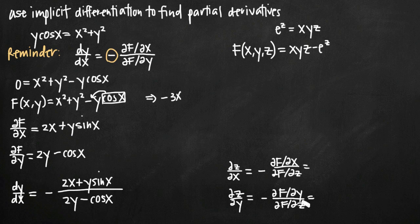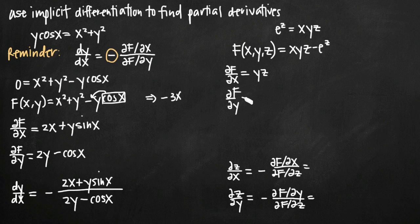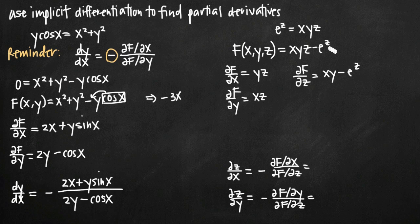We need to find three partial derivatives. Treating x as the variable with y and z as constants, the partial derivative of F with respect to x is yz (the e to the z term contributes zero). The partial derivative of F with respect to y is xz. The partial derivative of F with respect to z is xy minus e to the z, since the derivative of e to the z is itself.